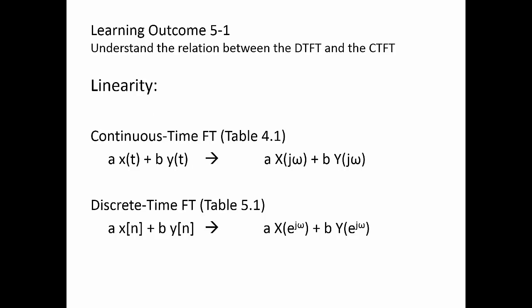Linearity. In table 4.1, we had linearity, that if you're given a x of t plus b y of t, the Fourier transform of that will be a, the transform of x, plus b, the transform of y. Looking in table 5.1, we also have a linearity property. Instead of x of t, we have x of n, because we're talking discrete signals, not continuous signals. And likewise, if we have a times x of n plus b times y of n, we will have a times the transform of x of n plus b times the transform of y of n. Same thing. And it works the same way as it did before, and you should use it the same way you did in chapter 4.